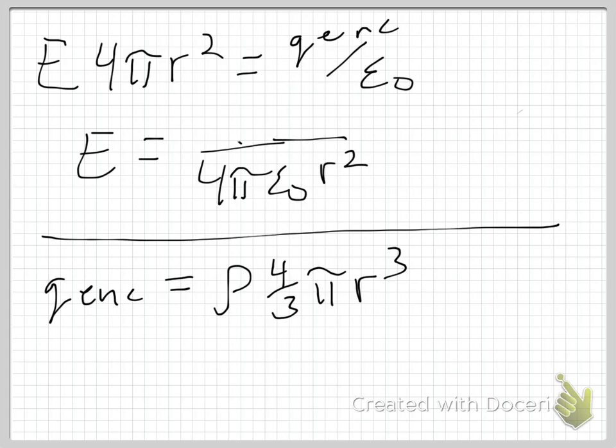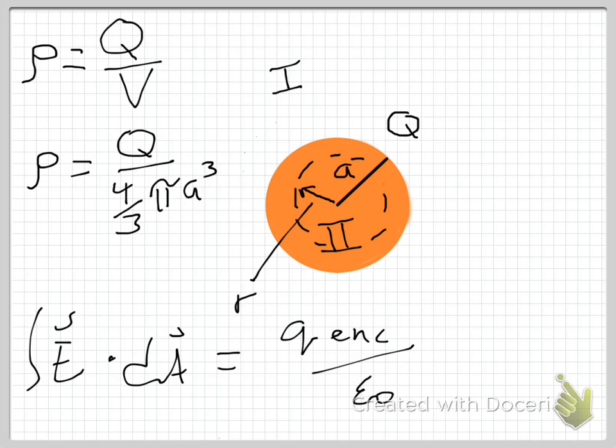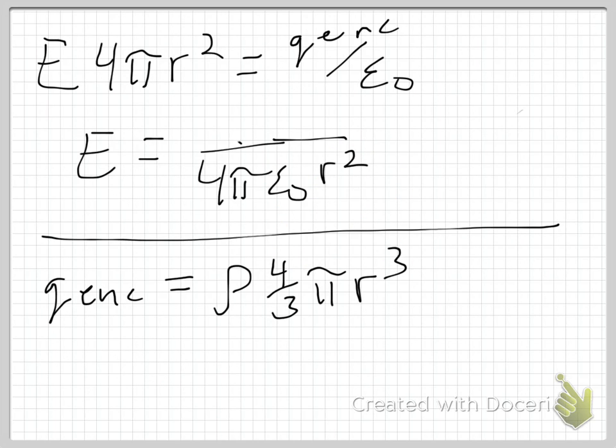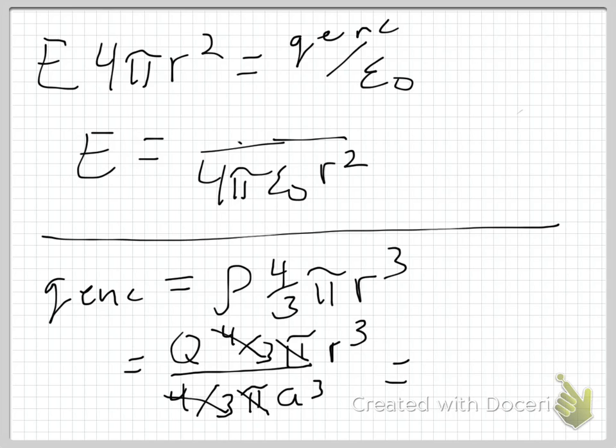I determined rho earlier to be Q over 4/3 pi a cubed. So I have Q over 4/3 pi a cubed, that is my rho times 4/3 pi r cubed. Obviously my 4/3 are going to go away, I'm going to lose a pi, and I get out of this that is Q times r cubed over a cubed. That's not a 9 cubed, let me make that clear, that's an a cubed. So that is my Q enclosed.